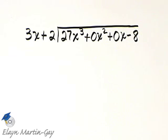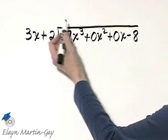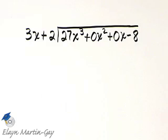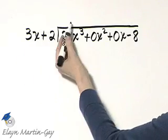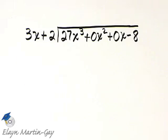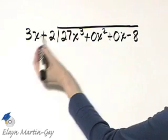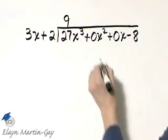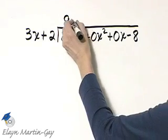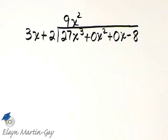What times 3x gives a product of 27x cubed, or you can think of it as 27x cubed divided by 3x gives what? Whichever you're comfortable with. Well, what times 3x is 27x cubed? I know 9 times 3 is 27, and then x squared times x is x cubed, so my first term in my quotient is 9x squared.